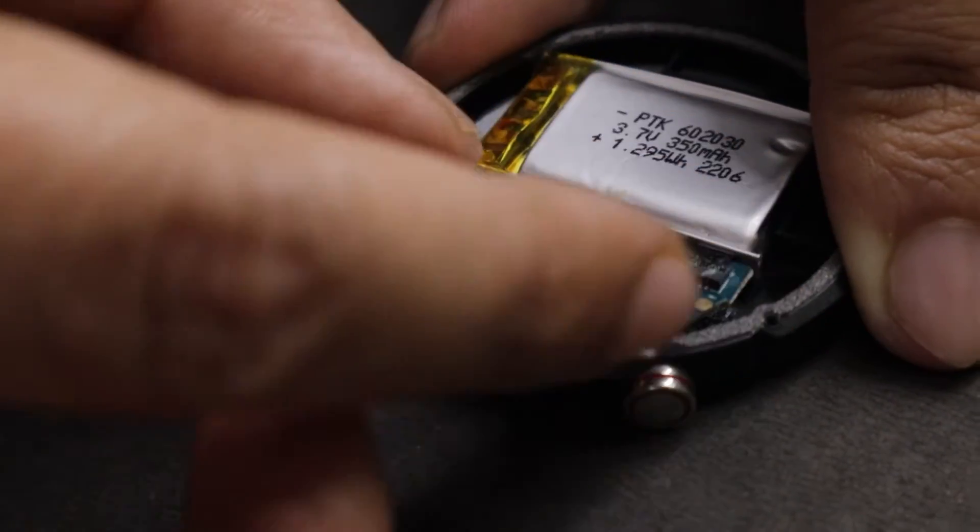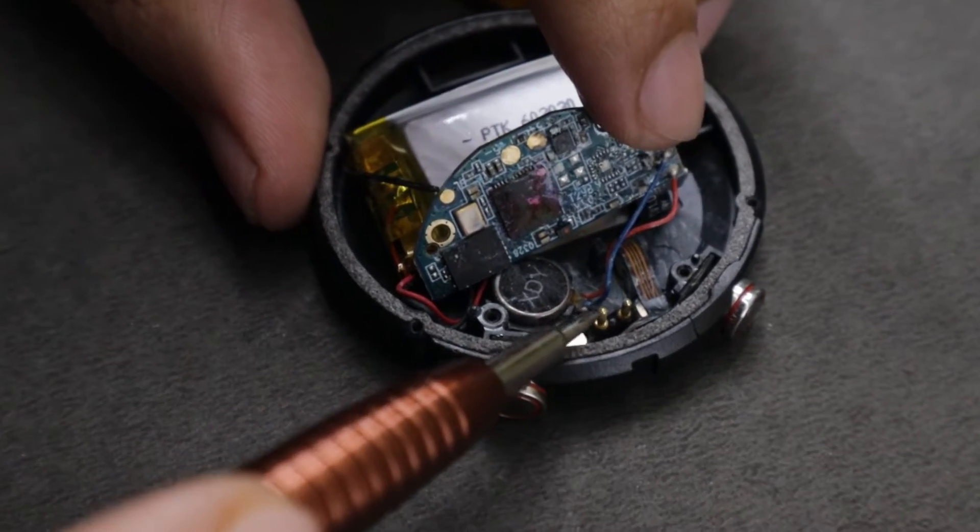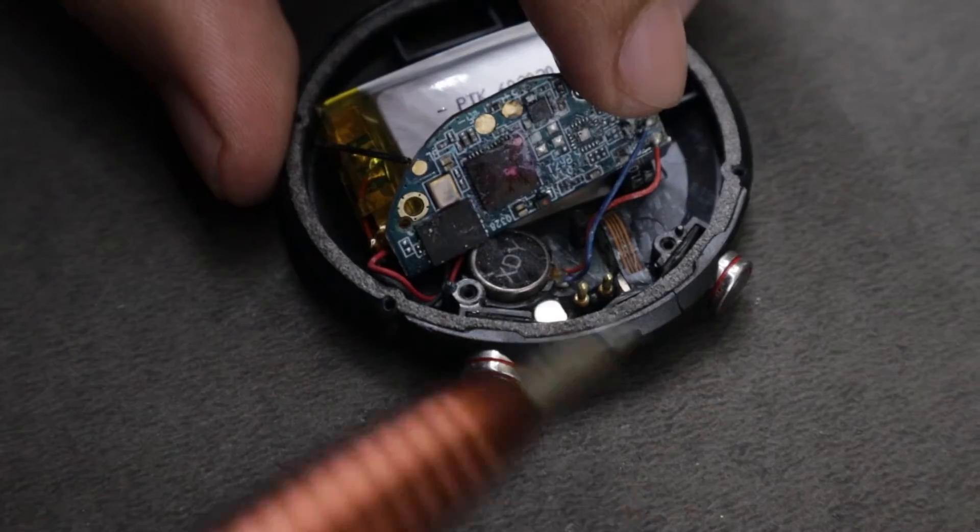I have unscrewed the board and now we can see the vibration motor for haptics below it. You can also see the charging pin that is used to charge the watch here.